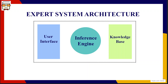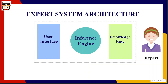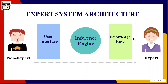Let me explain with a diagrammatic representation of the architecture of an expert system. Any expert system consists of three main components: the user interface, the inference engine, and the knowledge base. A human expert specialized in a particular field — such as a doctor or a sportsman — shares and saves their knowledge into the knowledge base. The expert system is then used by non-experts, who interact with it through the user interface.